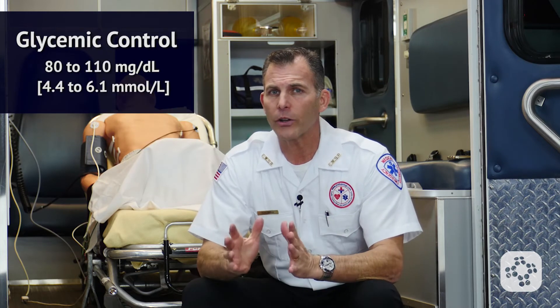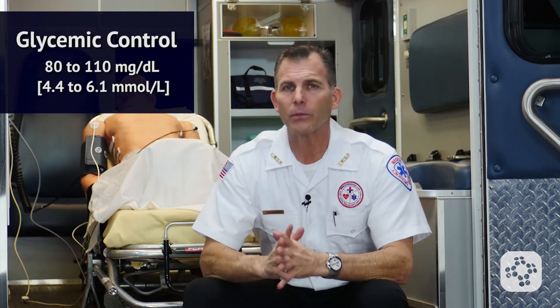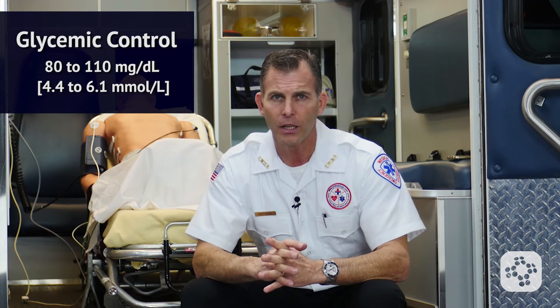Now let's look at glycemic control. Altering glucose concentration within a lower range of 80 to 110 should not be attempted because of the increased risk of hypoglycemia. The latest guidelines update for CPR and ECC does not have a recommended specific target range of glucose management in adult patients with return of spontaneous circulation after cardiac arrest.